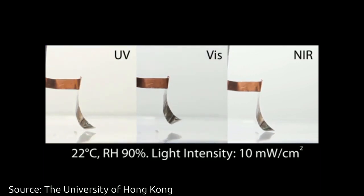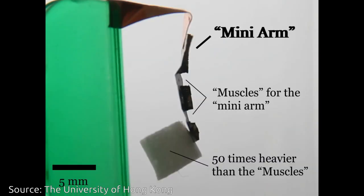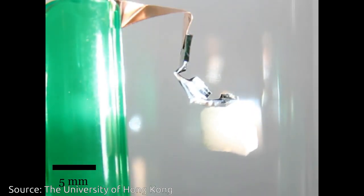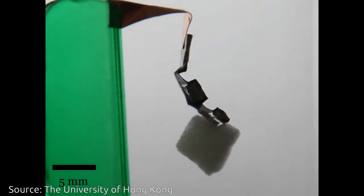The material actuation can be instantaneously triggered by visible light to produce fast deformation and exert a force equivalent to 3,000 times its own weight. The material cost of a typical actuator is low and can be easily fabricated within three hours.